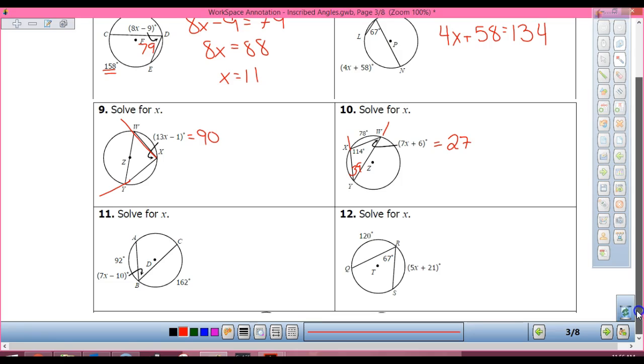Look at 12. This arc is 120. This angle is 62. So what's this arc? Yeah, that angle is 67. So the arc is 134. So that leaves what left over for that arc? 106. So that 5X plus 21 would equal 106.